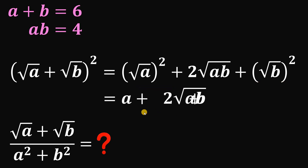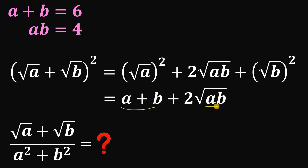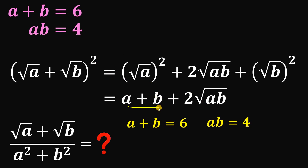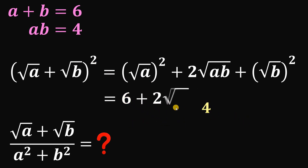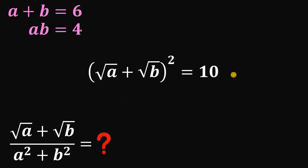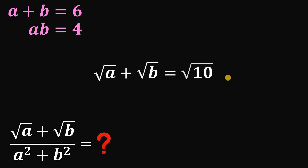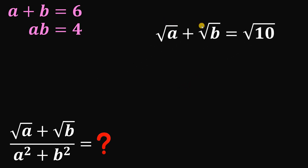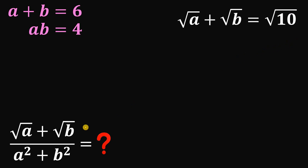Rearranging terms, we have a plus b and 2 times square root of ab. We know a plus b is 6 and ab is 4, so we replace a plus b with 6 and ab with 4. Square root of 4 is 2, and 2 times 2 is 4, so this is 6 plus 4, which equals 10. Therefore square root of a plus square root of b equals positive square root of 10.